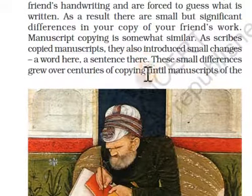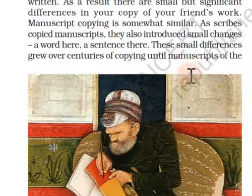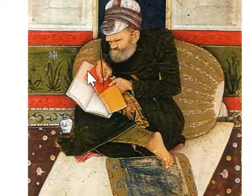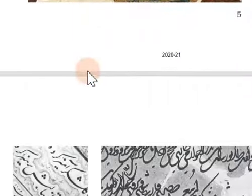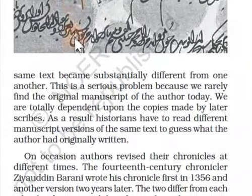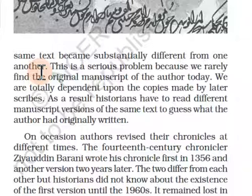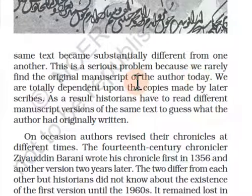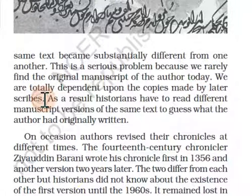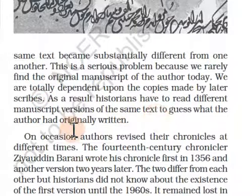These small differences grew over centuries of copying. This person is a scribe who is copying. This is a serious problem because we rarely find the original manuscript of the author today. We are totally dependent upon the copies made by later scribes. As a result, historians have to read different manuscript versions of the same text to guess what the author had originally written.